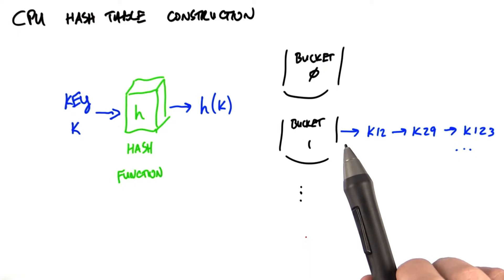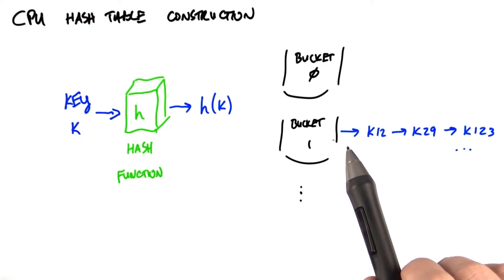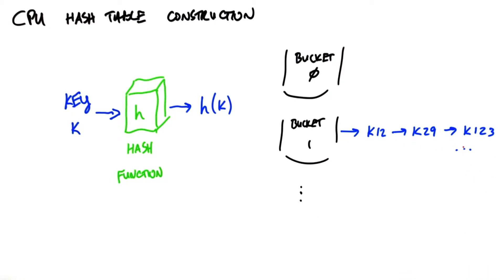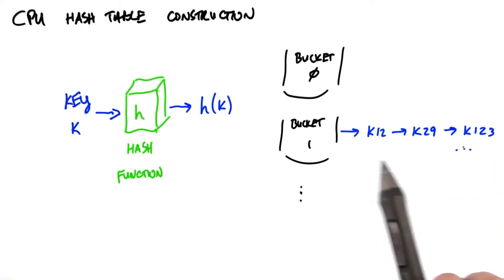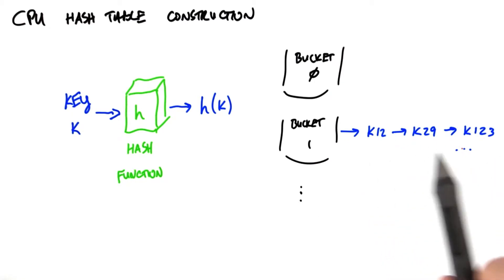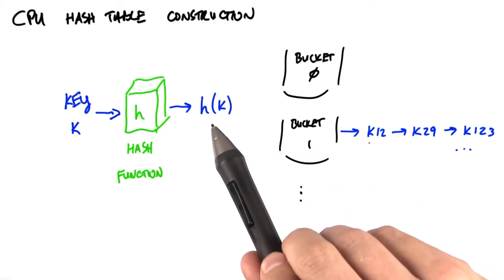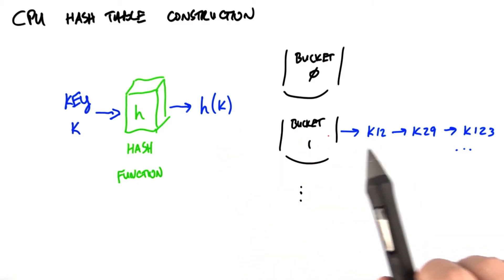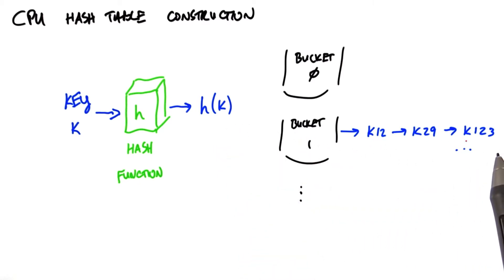Within a bucket, we store a bunch of items as a linked list, and this is called chaining. So we might have multiple items in this bucket — multiple keys. Key 12, key 29, key 123 all have a hash function value equal to 1, so they're placed in bucket 1 and we store them as this chained linked list.